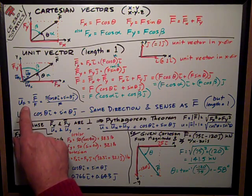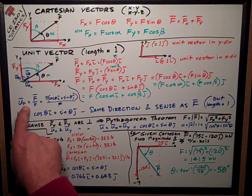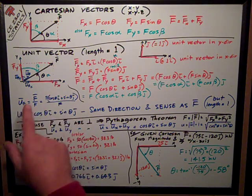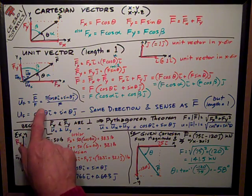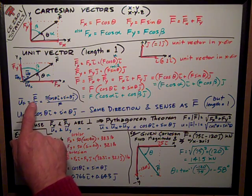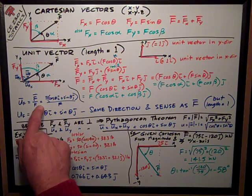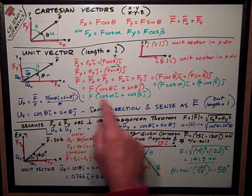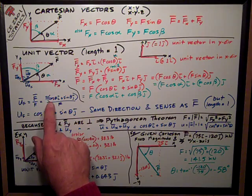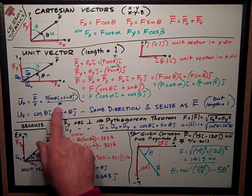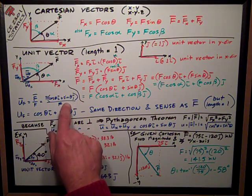All that being said, then we want to look at a unit vector in the direction of f, so it has a length of one. It's the vector f divided by the scalar magnitude of the vector. Substituting this term here, f parentheses cosine theta i plus sine theta j, divided by f.